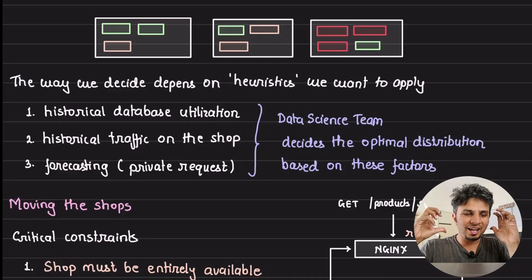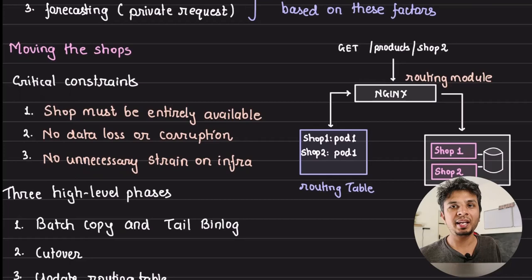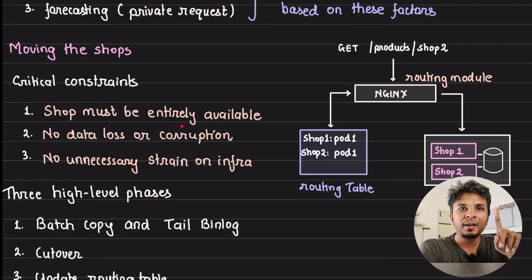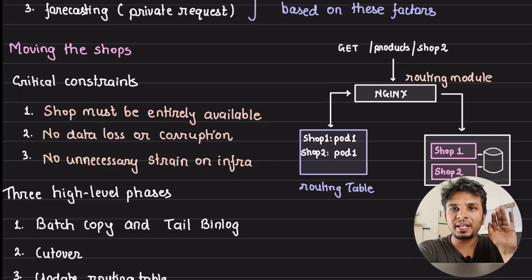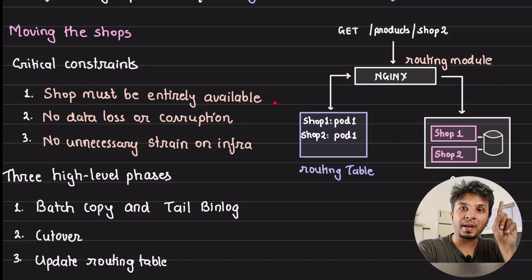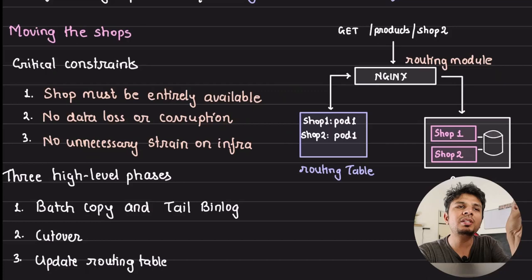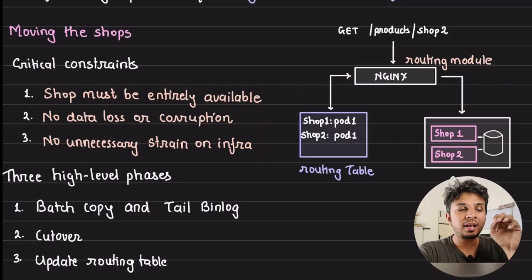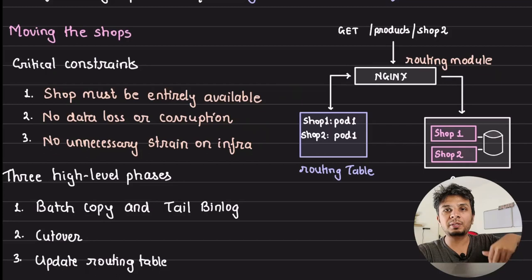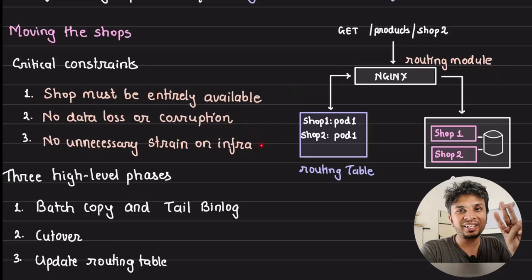There are three critical constraints for the shop movement. First, the shop must be entirely available — no perceivable downtime, as it would impact both your revenue and your customers' revenue. Second, there must be no data loss or corruption — every single row is critically important. Third, the movement must not be so expensive that it burdens your own database or infrastructure.